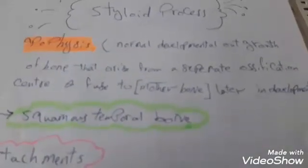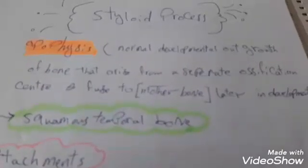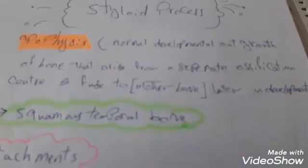The styloid process is an apophysis, and that means it's a normal developmental outgrowth of bone that arises from a separate ossification center and fuses to mother bone later in development. The mother bone for styloid process is the temporal bone.